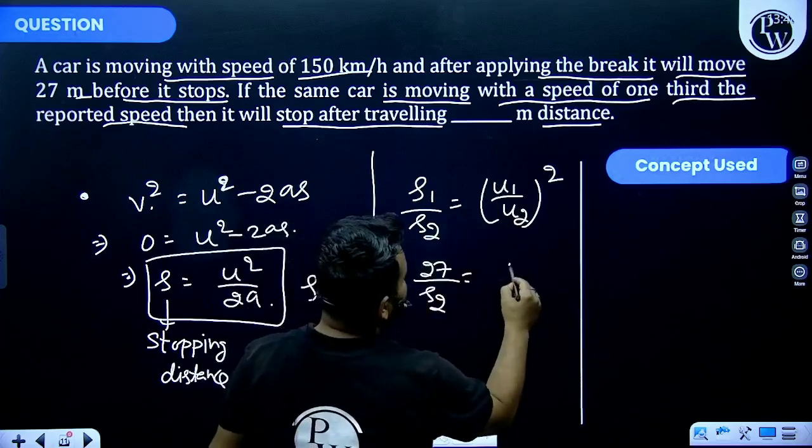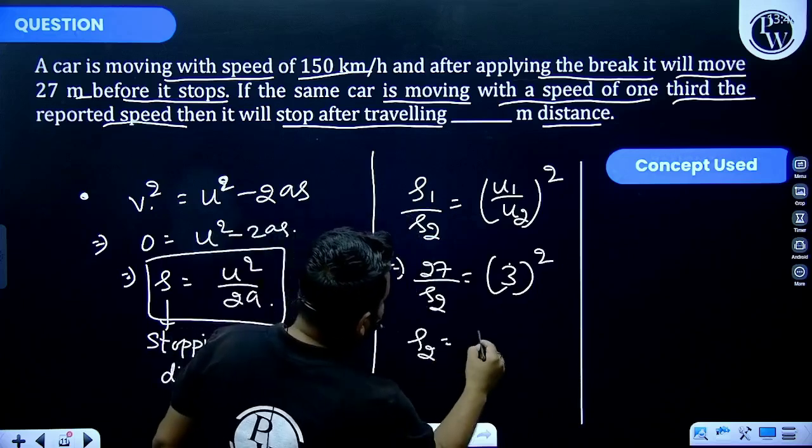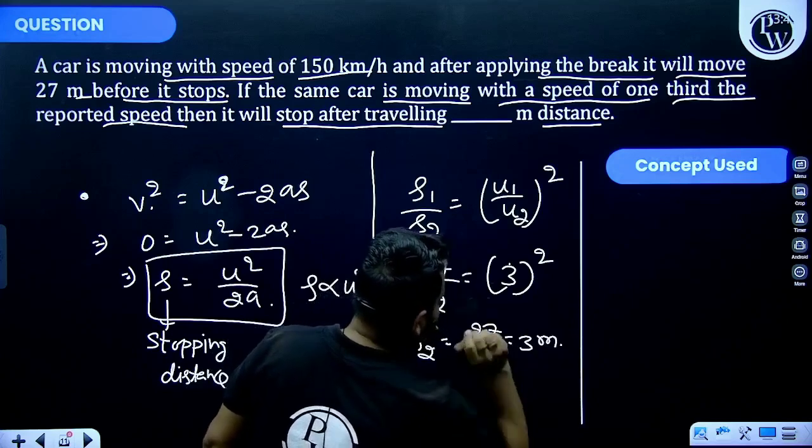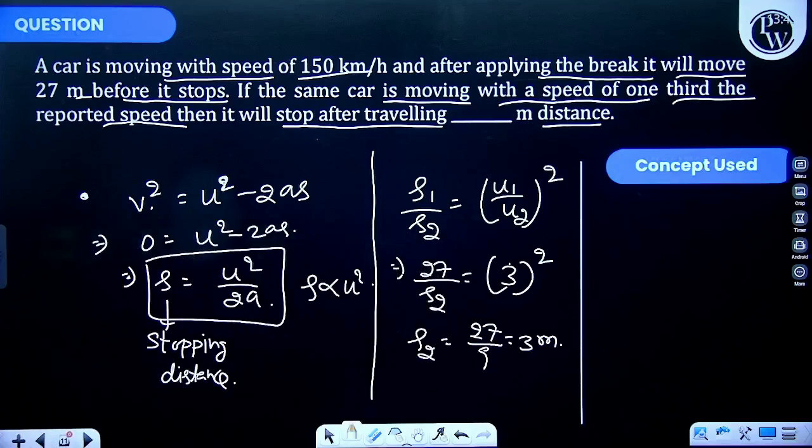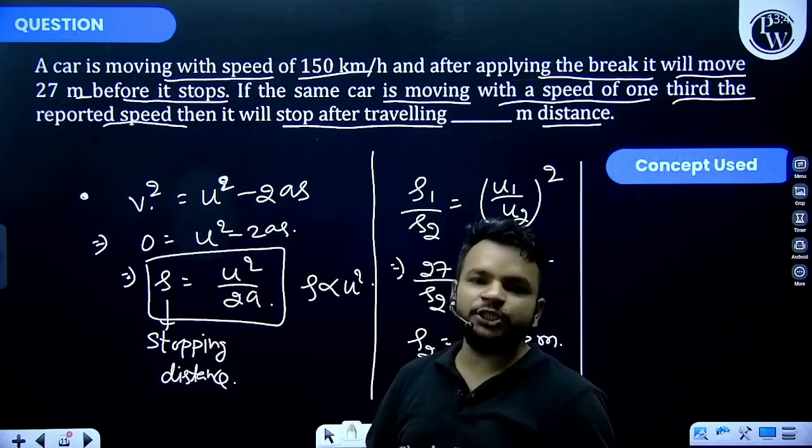So if the speed of car becomes one-third of the initial speed, the distance required for stopping of the car is 3 meter.